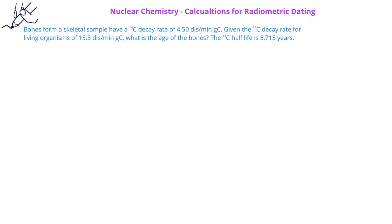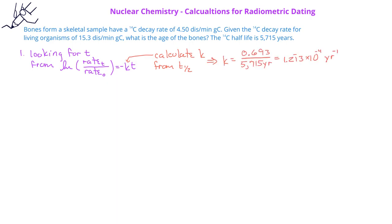To begin this problem, we recognize that we'll need to use the rate constant k, so we have to calculate the rate constant from the half-life. To do this, we find that the rate constant is equal to 0.693 divided by 5,715 years, or 1.213 times 10 to the negative fourth reciprocal years.